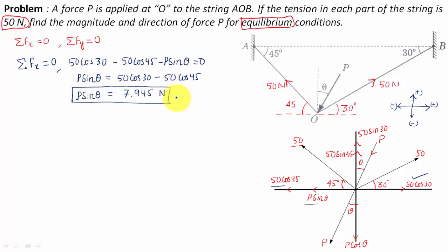We'll now write down summation of all the forces in y direction equals zero. This force in the upper direction and this also is in the upper direction, hence both are taken as positive, whereas P cos theta is in the downward direction and has to be taken as negative.